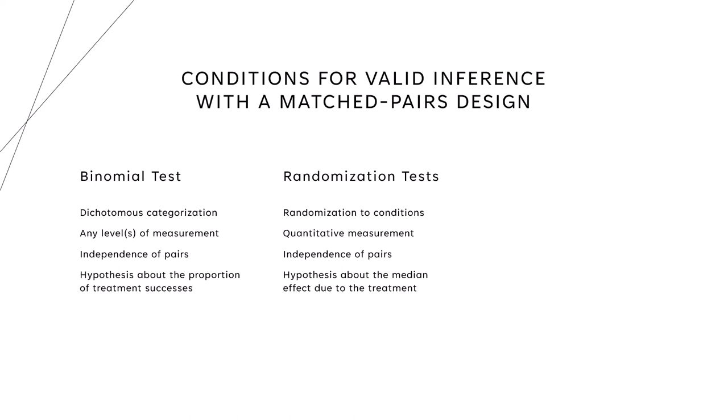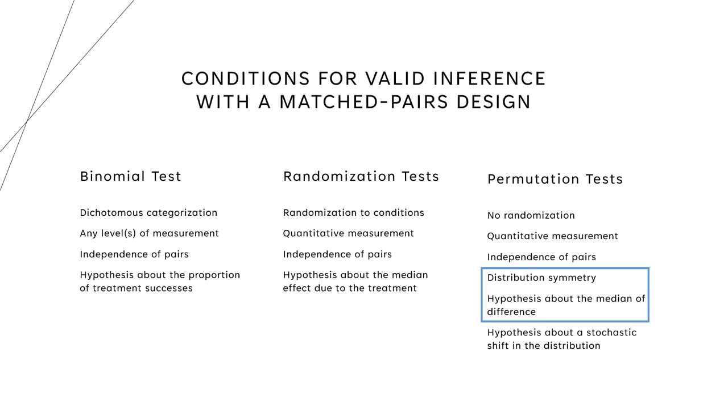The main point here is that one of the characteristics of nonparametric methods is that we can make choices. What if we don't have randomization, but we still have quantitative measurement and independence of pairs? Then we can do a permutation test.